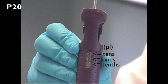On the P20, the first number displayed represents tens of microliters, the second number represents ones of microliters, and the third number which is red represents tenths of microliters.